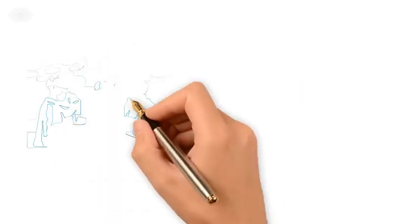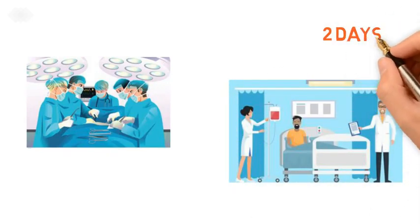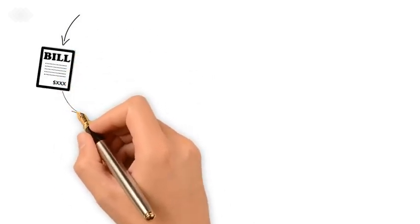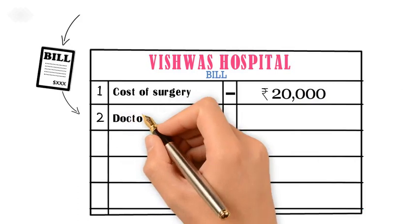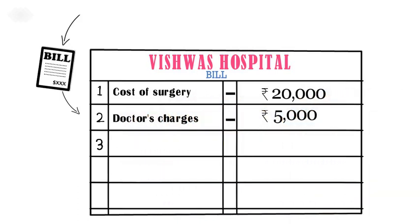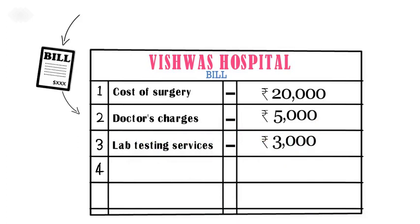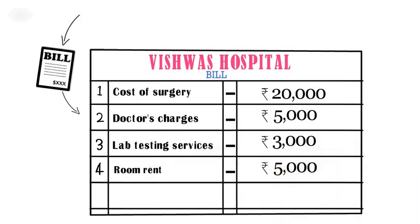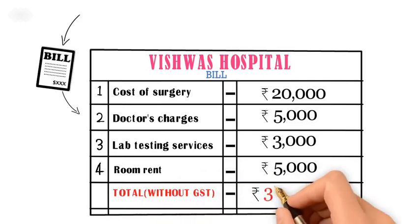For example, a person got admitted in a hospital for a surgery. He stayed there for a total of two days. At the end of two days, the hospital billed him as follows: cost of surgery rupees 20,000; doctor's charges rupees 5,000; lab testing charges rupees 3,000; room rent rupees 5,000. Total without GST: rupees 33,000.